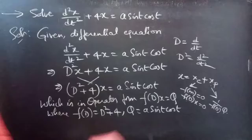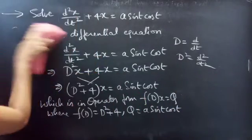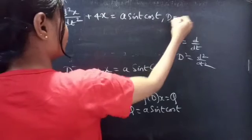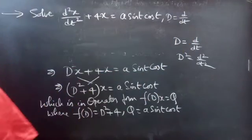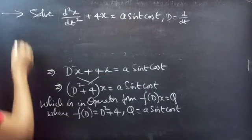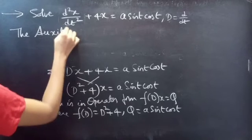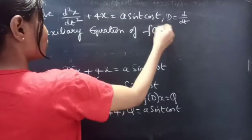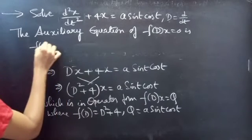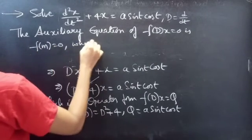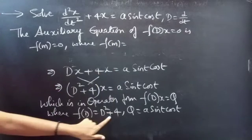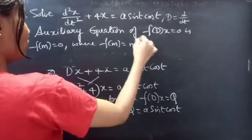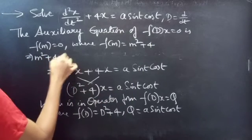Let's find the complementary function using the auxiliary equation. The auxiliary equation of f(D)·x = 0 is f(m) = 0. Since f(D) = D² + 4, replacing the differential operator D by m gives f(m) = m² + 4. So the auxiliary equation is m² + 4 = 0.